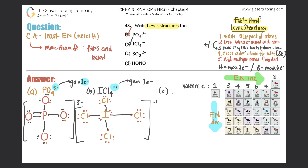C: SO₃²⁻. Between sulfur and oxygen, sulfur is lower on the periodic table, so electronegativity decreases going down — sulfur goes in the middle surrounded by three oxygens. Both sulfur and oxygen have six valence electrons, so I'll draw six dots around each: six for each of the three oxygens and six for the central sulfur.